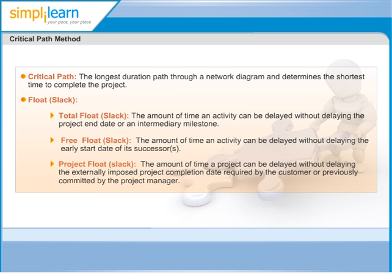What is the slack of the activities on the critical path? The answer is zero, because there is no scope to delay activities on the critical path. The critical path actually represents the project duration — those activities add together to give the project duration. So there is no scope for delay. Delaying activities on the critical path is as good as delaying the project duration.